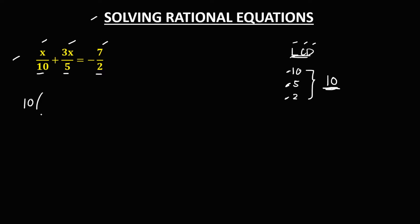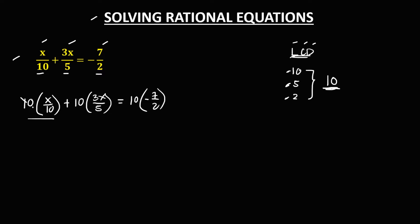So we have 10 times x over 10, plus 10 times 3x over 5, equals 10 times negative 7 over 2. Then simplify: for the first term, the 10 cancels, so we have x. For the second term, 5 and 10 gives 2, so 2 times 3x equals 6x. For the right side, 10 and 2 gives 5, and 5 times negative 7 is negative 35.